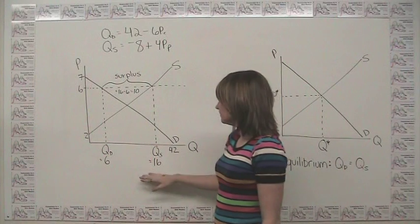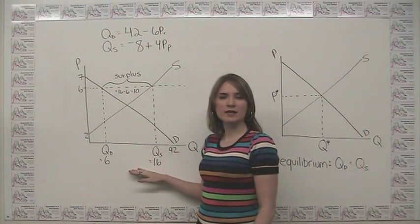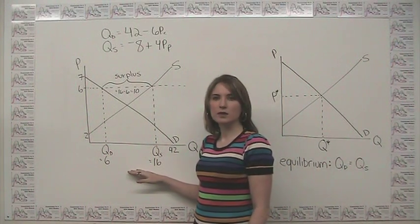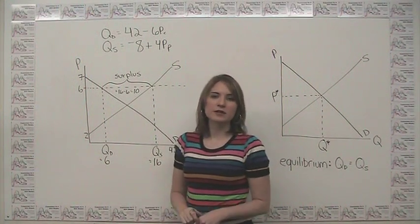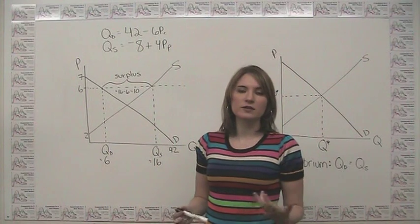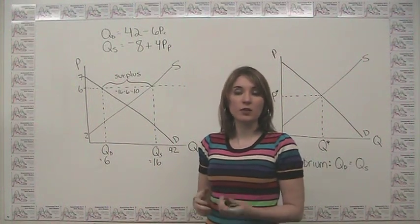So now we say, well, producers are supplying 16 units of this item, but at this price only 6 people want to buy. So we have some left over. And companies are going to end up with this in inventory. They're not going to be able to get rid of it at the current price.